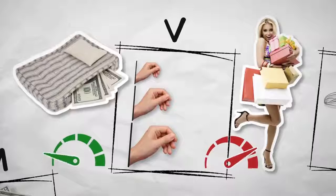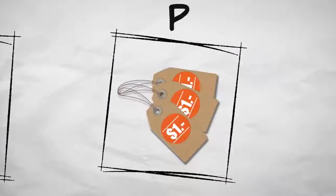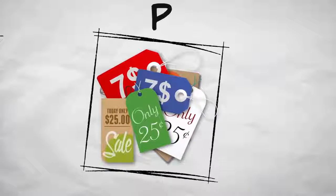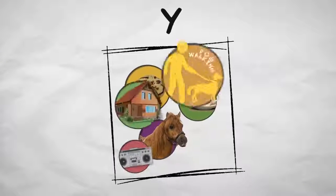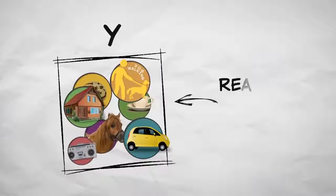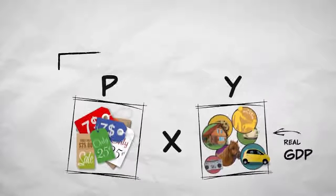P would be the price level of all finished goods and services in an economy. And Y would be all the finished goods and services sold in an economy. So Y is real GDP, and when you multiply it by a measure of the price level, you get nominal GDP.